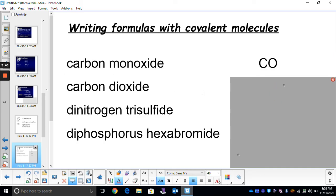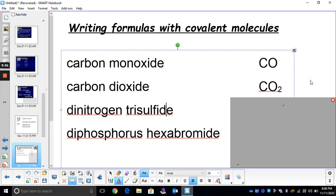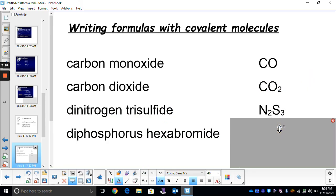Carbon dioxide: we have one carbon and two oxygens. Dinitrogen trisulfide: we have two nitrogens and three sulfurs. Diphosphorus hexabromide: we have two phosphorus and six bromines.